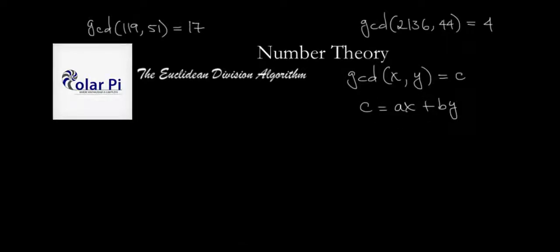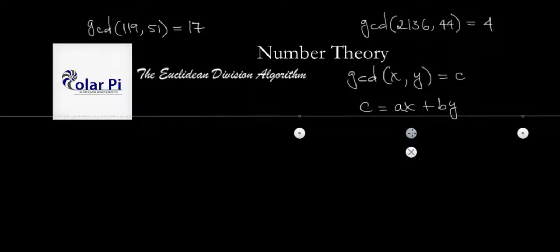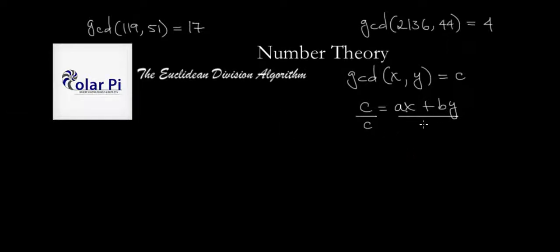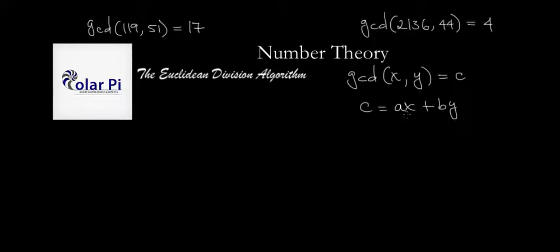A curious question is: why must this be true? If you can write C as a linear combination of X and Y, why is C necessarily the greatest common divisor? Well, the left side is divisible by C, so the right side must also be divisible by C. That means I can factor out a C from X and from Y — not necessarily from A or B, since C frequently doesn't divide A or B. Therefore C must divide X and C must divide Y.